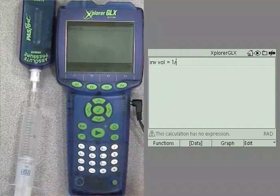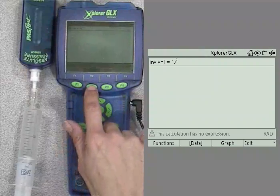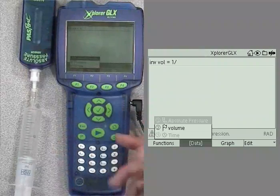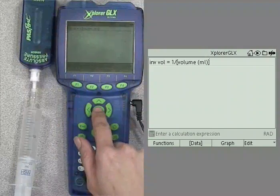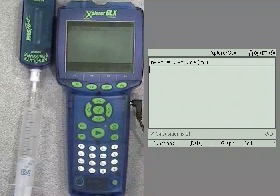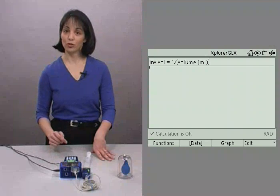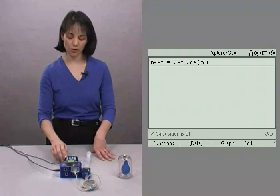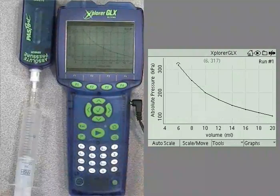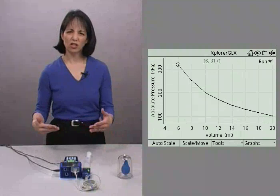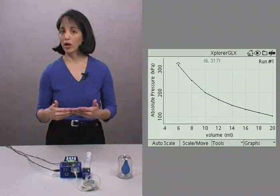And then equals, and we want that to be 1 divided by our volume. So 1 divided by, and then go up to our data source, which is under the F2 key, and select volume, which is item 2 on the menu. And then push the check mark. And the calculator on the bottom left of the screen tells us that our calculation is okay. So back to the graph display. Home, graph.